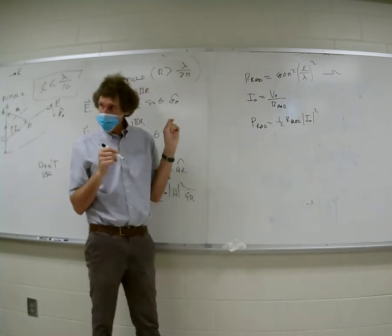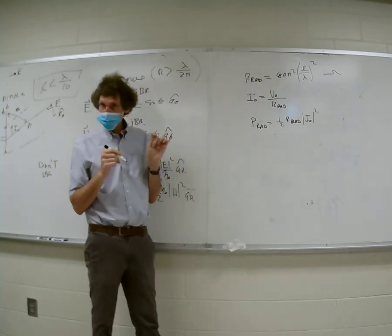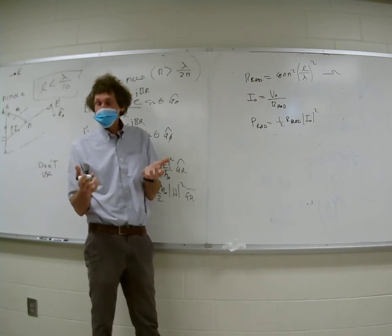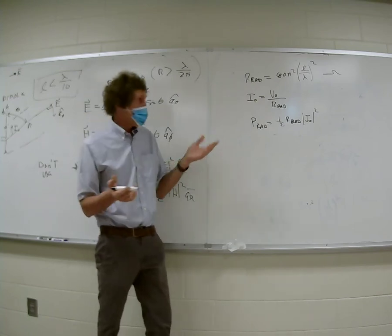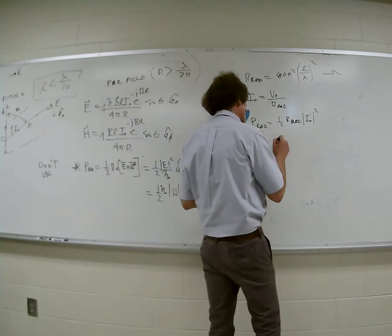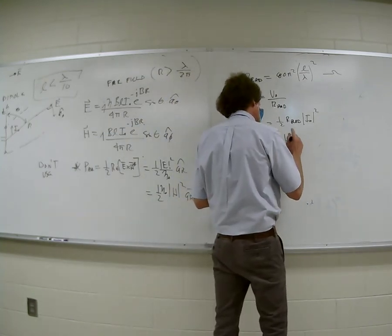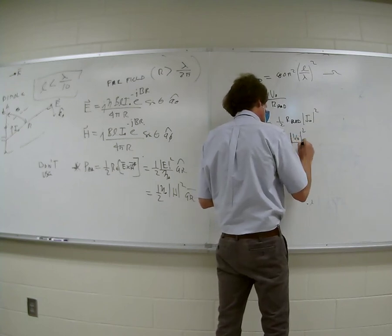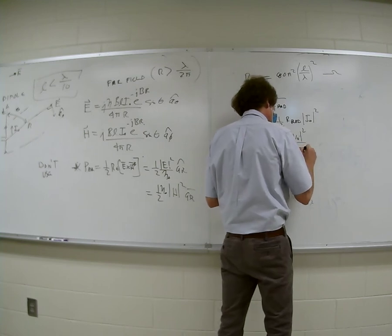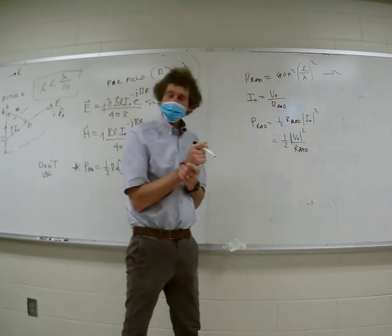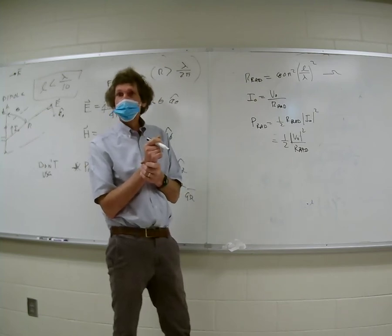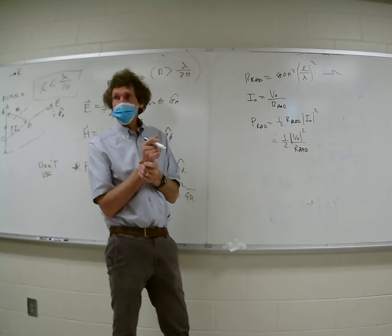Total power radiated would be one-half times the radiation resistance times the magnitude of I₀ squared — that's in watts. You can also simply say it's one-half times |V₀|² over R_radiation. V squared over R is the same as power in a resistor — if it's an AC source and V is the peak value.